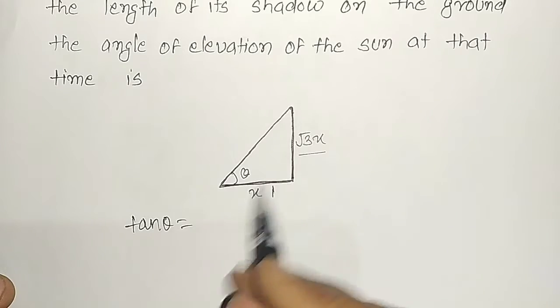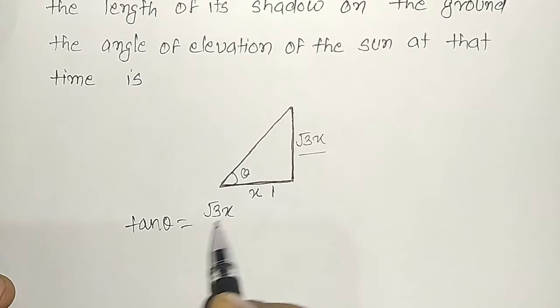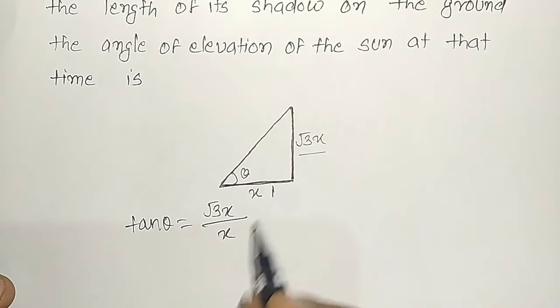So tan theta equals the value of perpendicular in this triangle is root 3x and the base is x. So x and x cancel out.